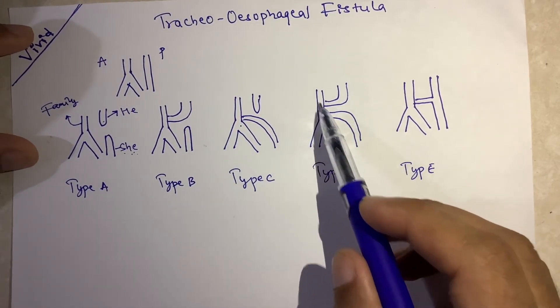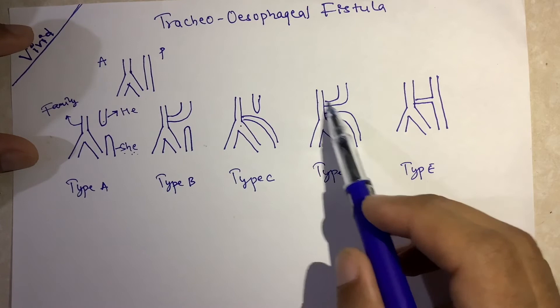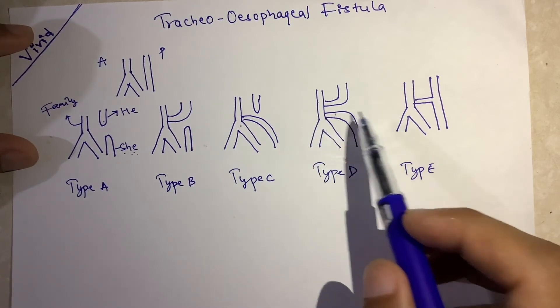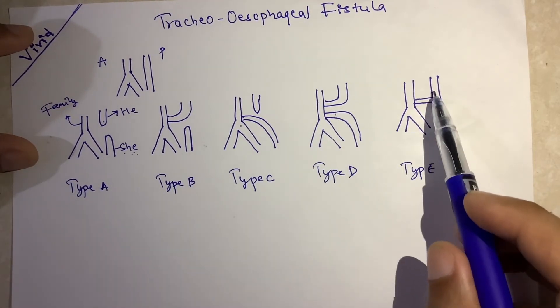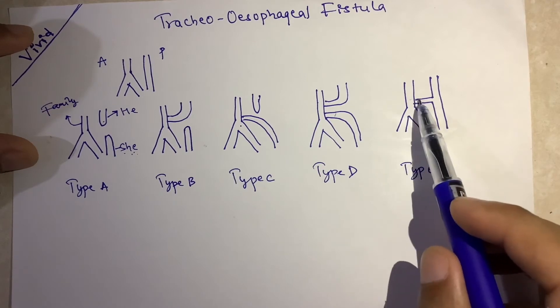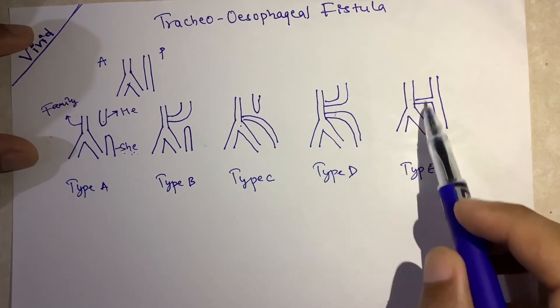In type D, both boy and girl and the family of both boy and girl come in one place and meet each other and talk about their marriage.